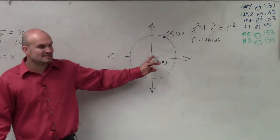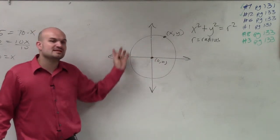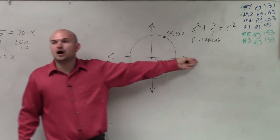Because remember, a circle is a set of points, equal distance from the center, right? So x and y represent any point that's on the circle. r represents the radius.